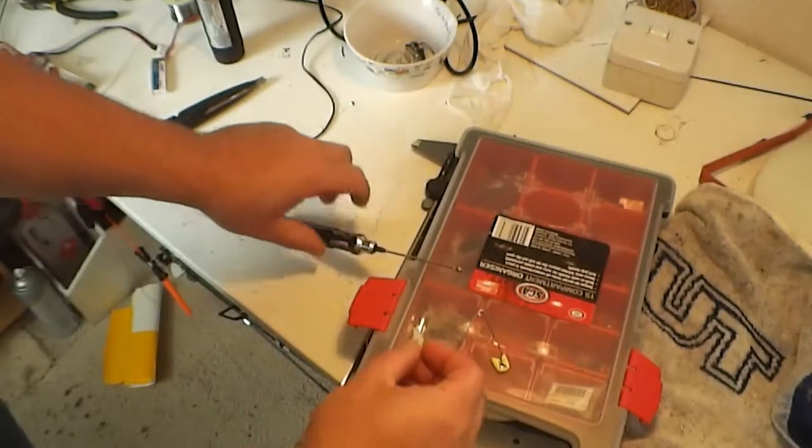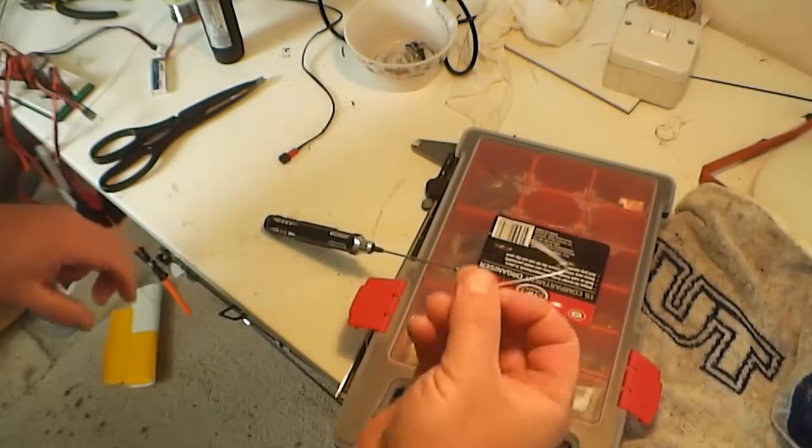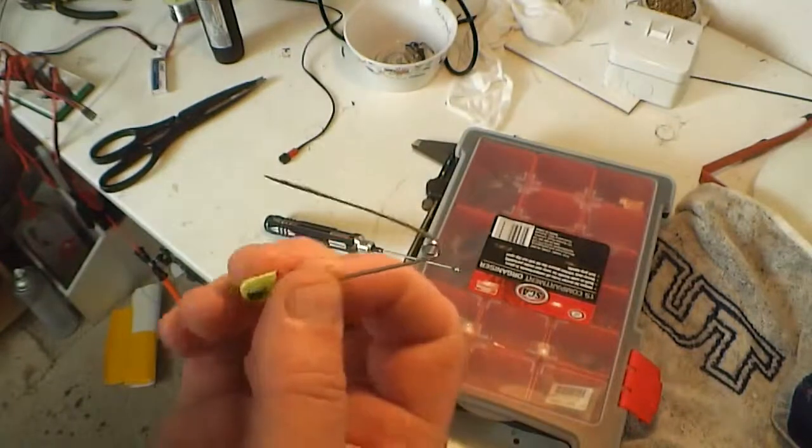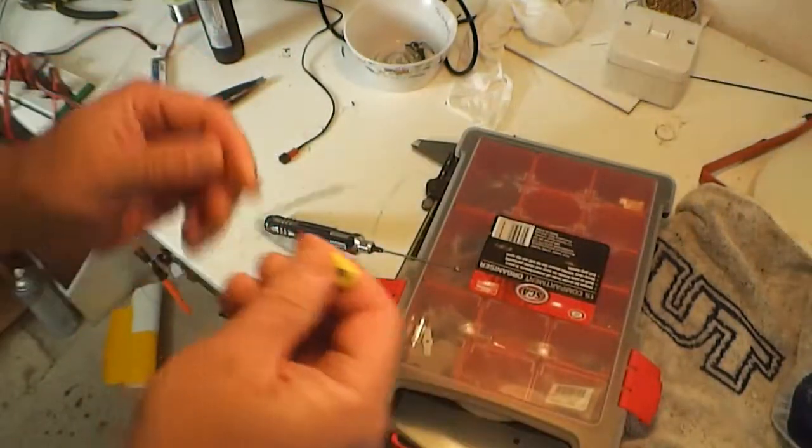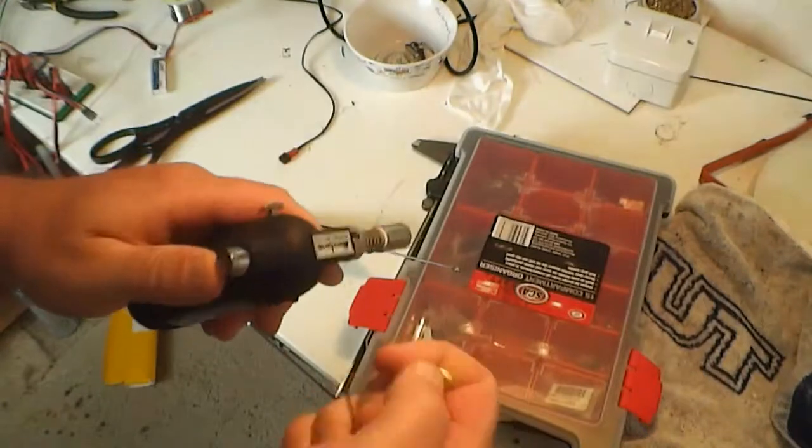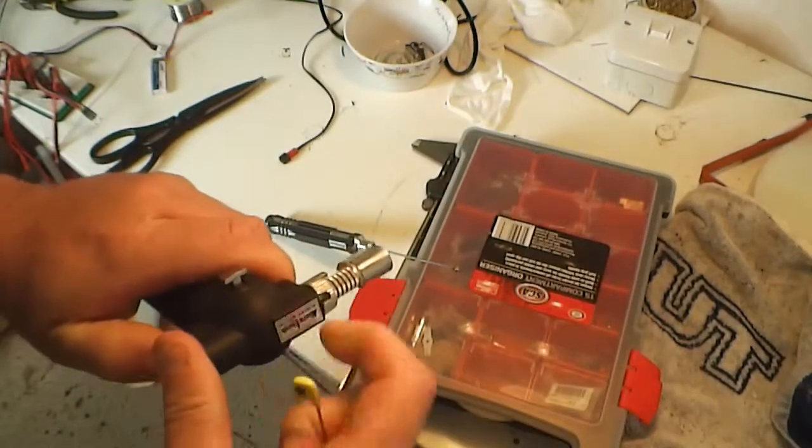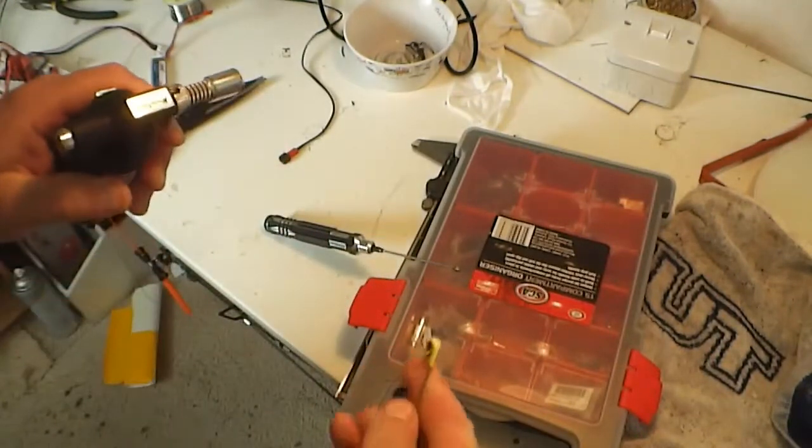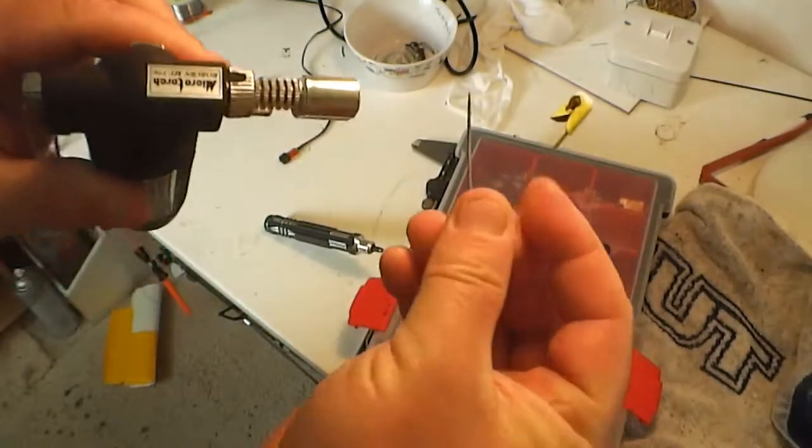What I do is I get a safety pin—just a normal nappy safety pin—and a little blowtorch. What I'm going to do is heat that up red hot, just the tip of it.